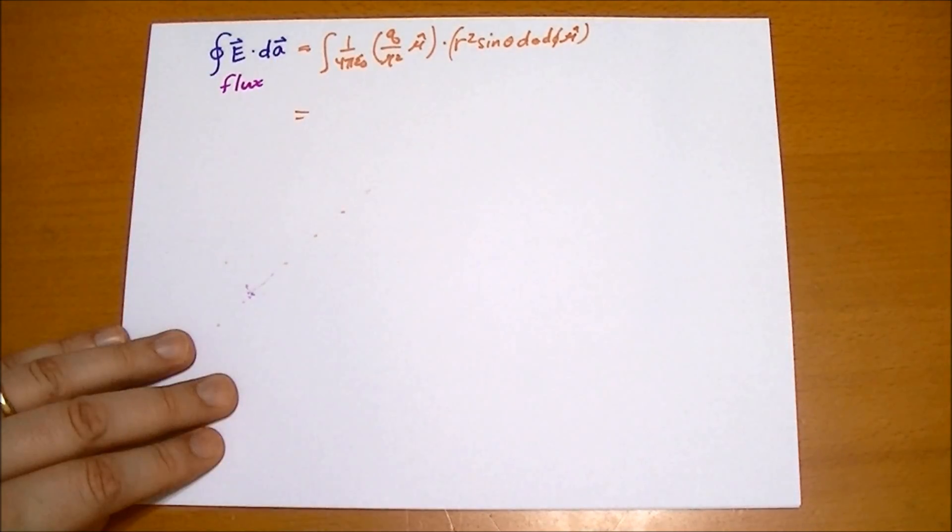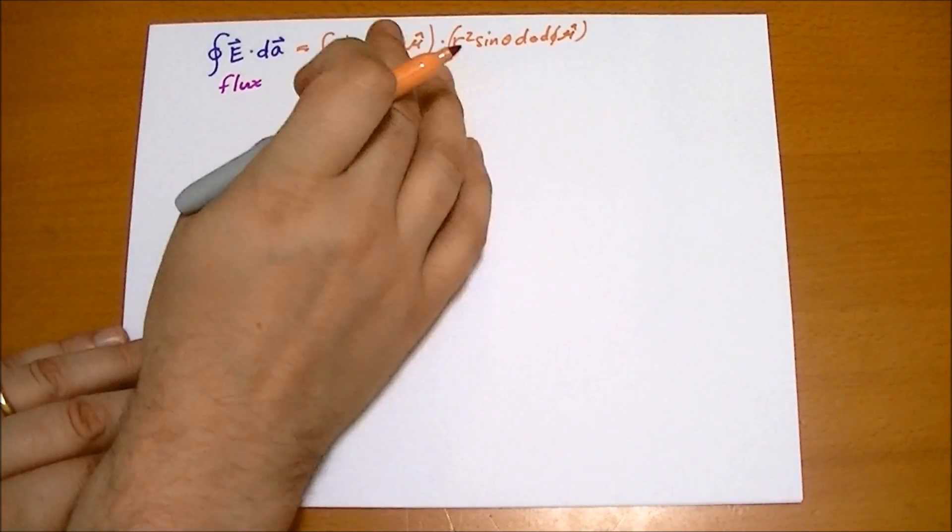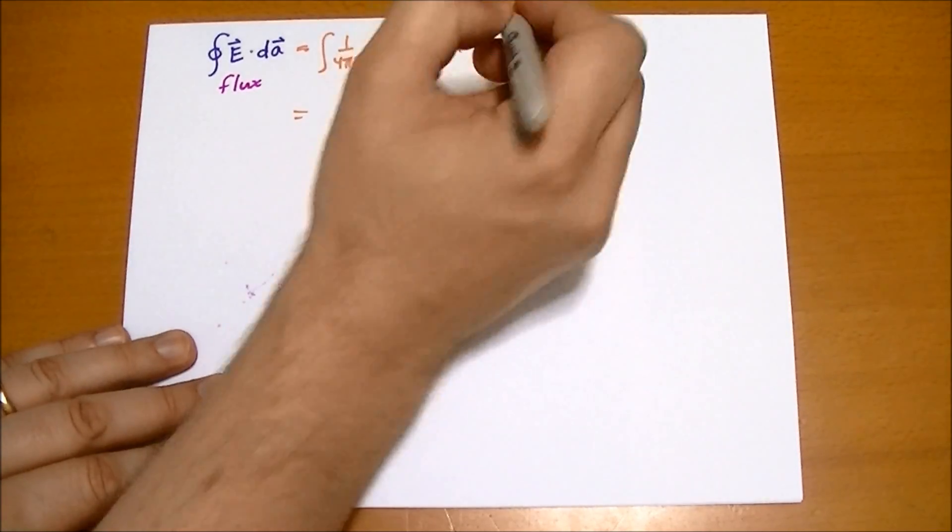And dotting those two products together we get q, this is r squared curly r.